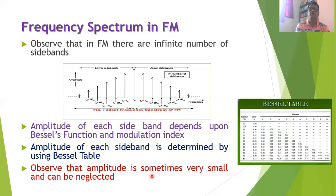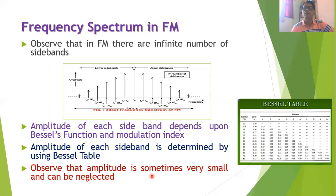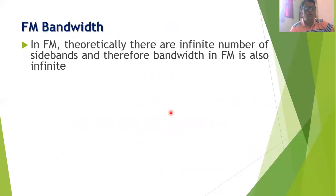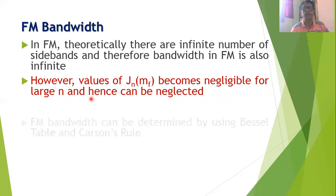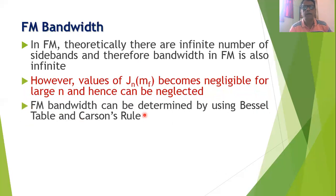From the Bessel table, one can observe that the amplitude of some sidebands is very small and can be neglected. So practically, we only consider sidebands with sufficiently high amplitudes and neglect others. In FM, theoretically bandwidth is infinite, but since the Bessel function values decrease for large n, Jn(MF) becomes negligible for large n.